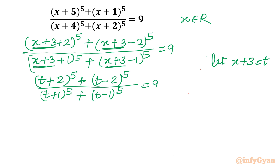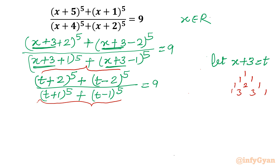I will use Pascal's triangle to find the coefficients for the power 5 expansion in the numerator and denominator. Writing the rows quickly: 1,2,1 — 1,3,3,1 — 1,4,6,4,1 — and 1,5,10,10,5,1. These are our coefficients for the power 5 expansion.